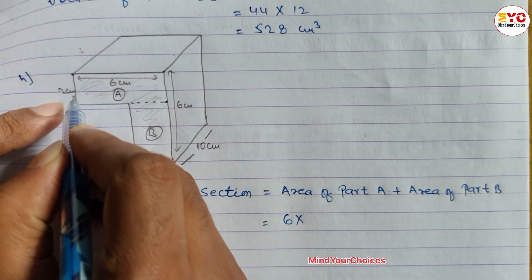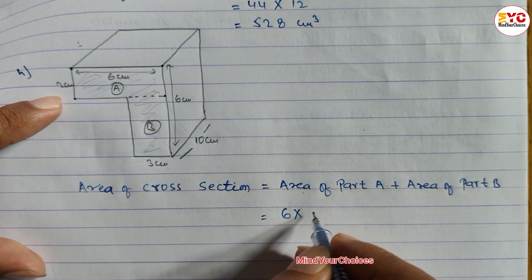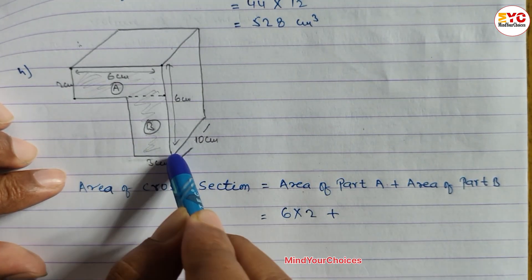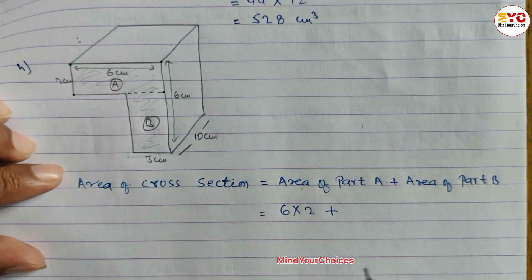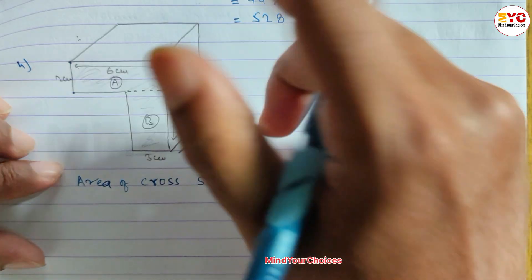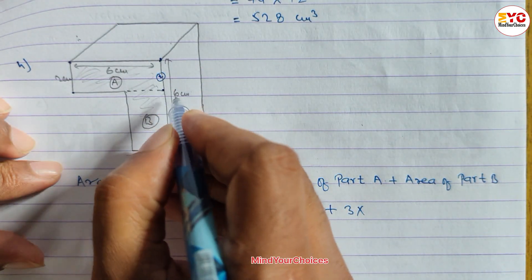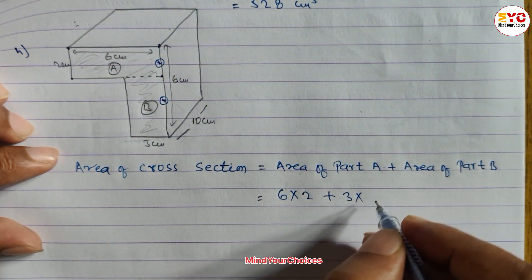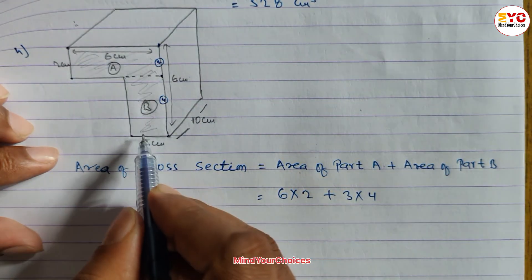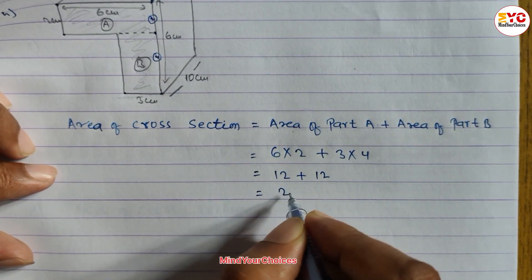6 into breadth — breadth is 2 — so we write 6 into 2, plus area of Part B. Part B: length from here to here is 3, breadth from here to here — total 6, subtract 2 — gives 4. So we write 3 into 4. That gives us 6 into 2 plus 3 into 4, which is 12 plus 12 equals 24 cm².